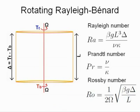When the system is rotated about a vertical axis, as is indicated in the figure, the system is called rotating Rayleigh-Bénard convection. The rotation rate of the system is indicated by the Rossby number.